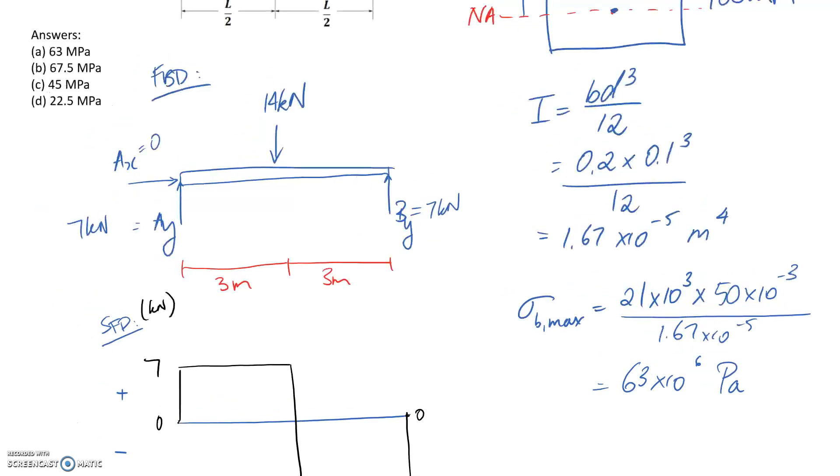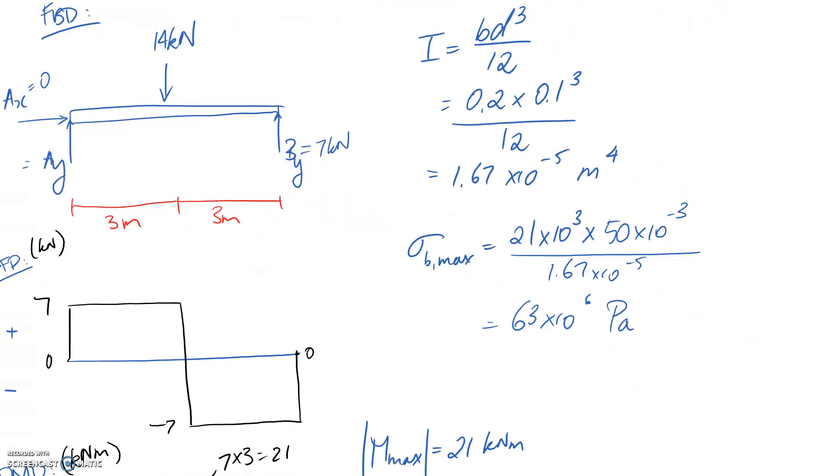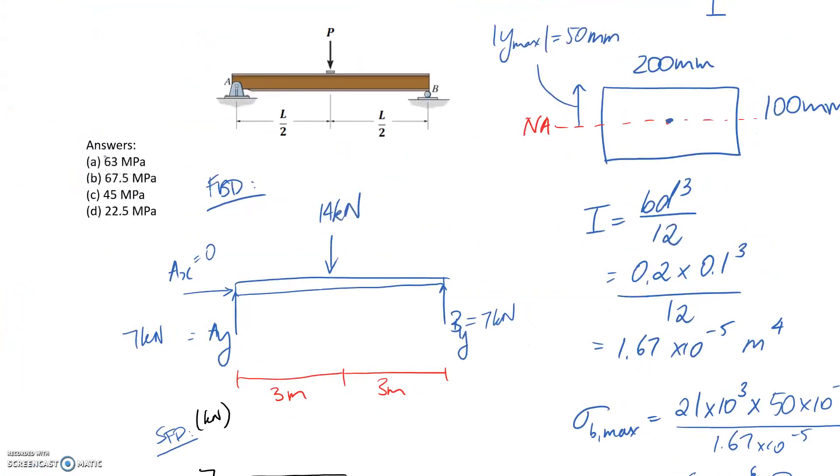Now, all of our answers are in megapascals. So in order to go from pascals into megapascals, you need to divide by 10 to the 6. So that's just going to leave us with 63 MPa. So looking now for this answer in our list, and we can see that we do indeed have it. So that's the answer to this question. We'll see you again. Thank you.